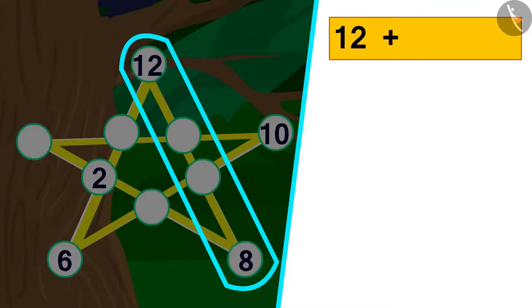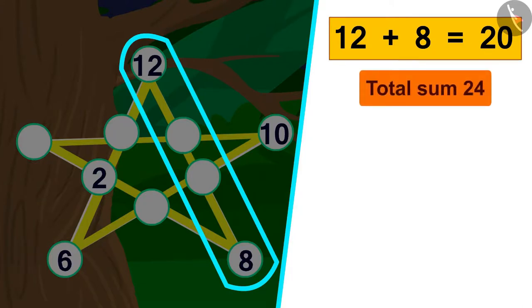If we add these two numbers, the answer will be 20. Now, the total addition of this edge should be 24. This means that in these two spaces, we have to write numbers whose sum is 20 less than 24, or 4.